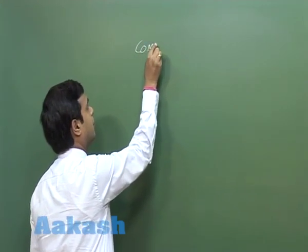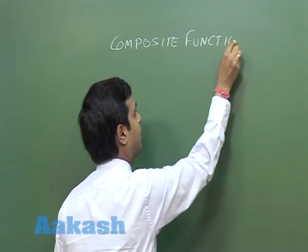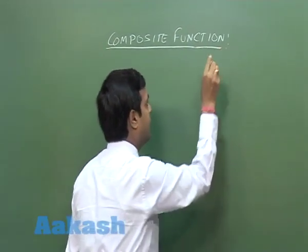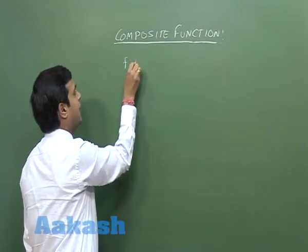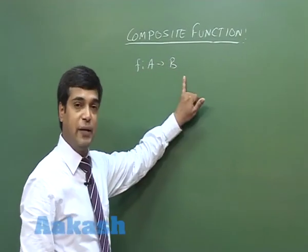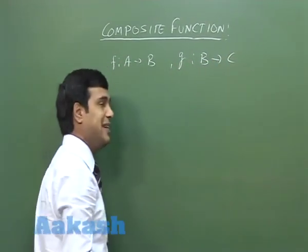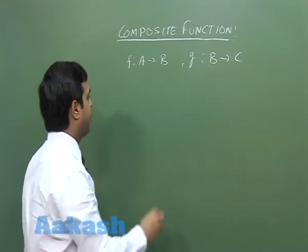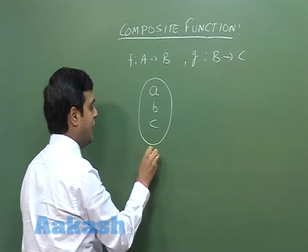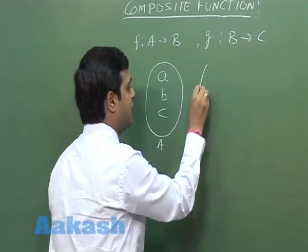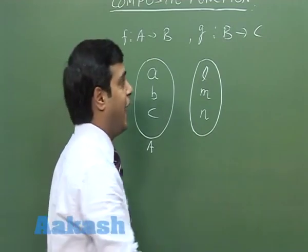Let us define the term composite function. Let us say we have two functions f and g defined for given sets. Consider f is a function defined from set A to set B, while g is another function defined from set B to C. Let's define the sets A, B, C using a Venn diagram. Say set A has elements a, b, and c, and set B has elements l, m, n.